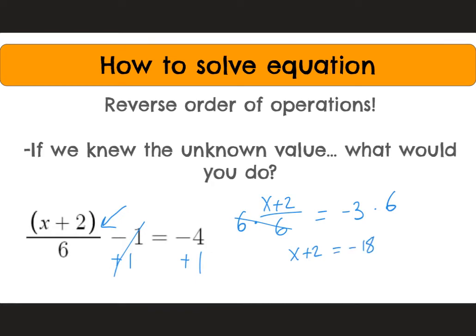And lastly, we would have added 2 as the first step. Well, this is our last step, subtracting 2. So we end up with x is equal to negative 20. And that's our final answer.